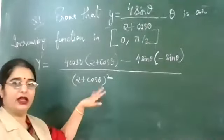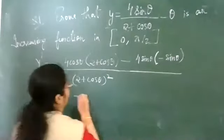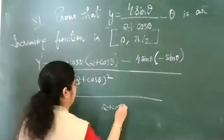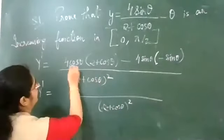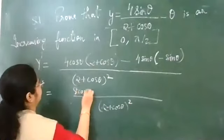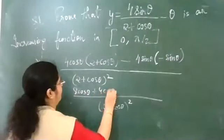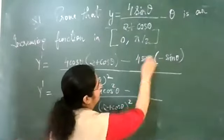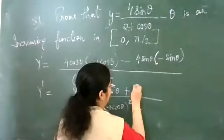So this is our function. y-dash equals: in the numerator, 4 gives us 8 — so 8cosθ — plus 4cos²θ, minus (from the minus−minus becoming plus) 4sin²θ, all over (2 + cosθ)².